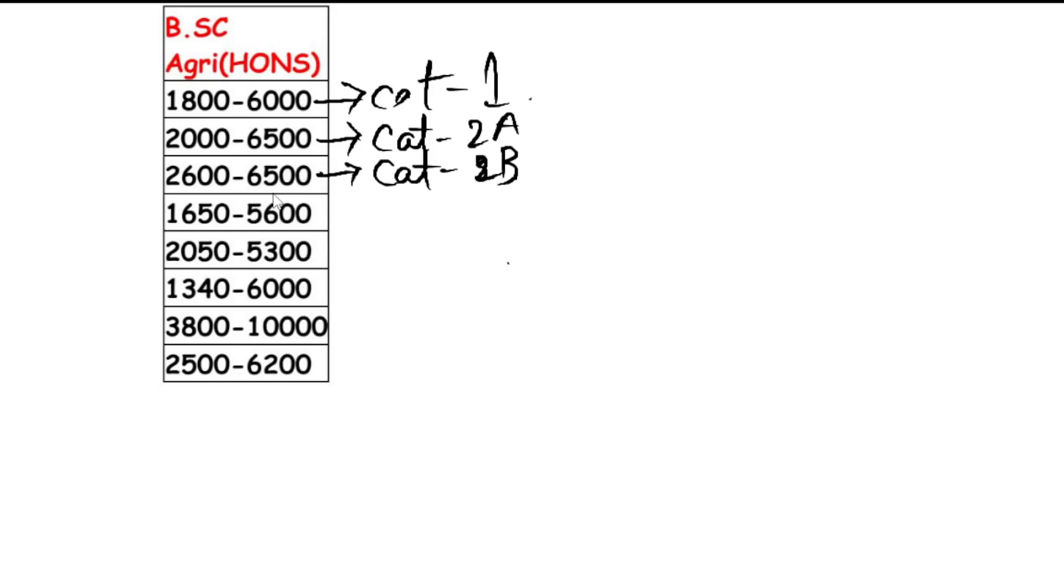1,650 to 5,600, the ranking is 6,500 in the first round. This is category 2A to 2B. In category 3A, in the first round you can easily go to B.Sc. Agri seat, you can go to bookmark.